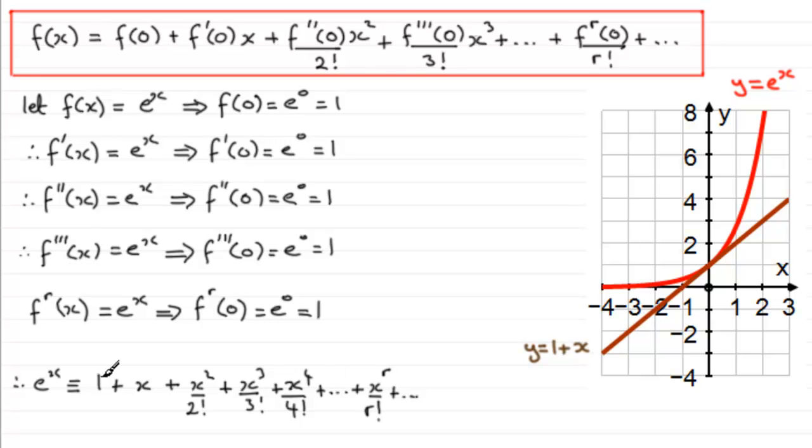But then suppose we take the next three terms, one plus x plus x squared over two factorial, and we were to plot that graph. Let's see what happens with this quadratic. There you go, you get this graph here and you can see that we've now got more of the curve closer to the red graph of y equals e to the power x for a wider range of values of x.